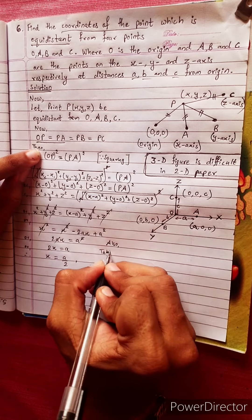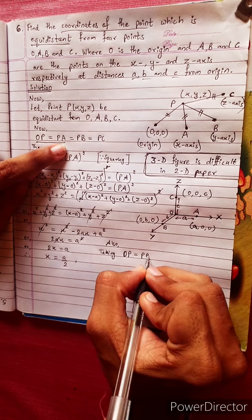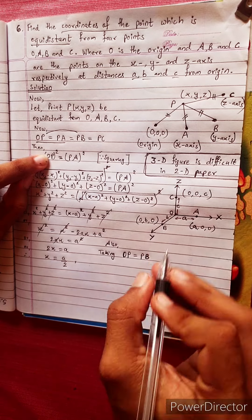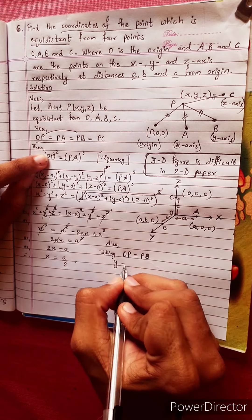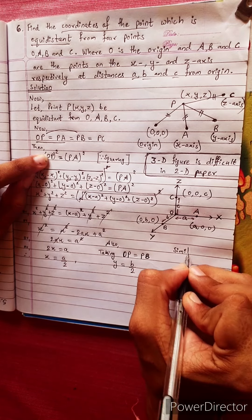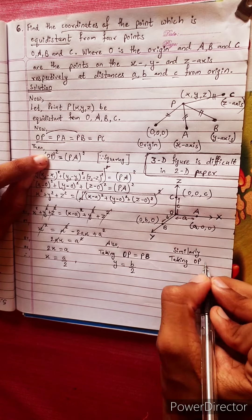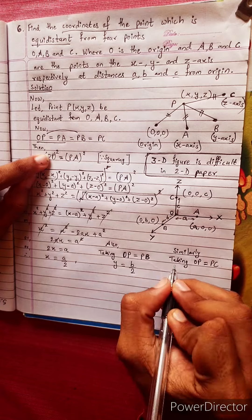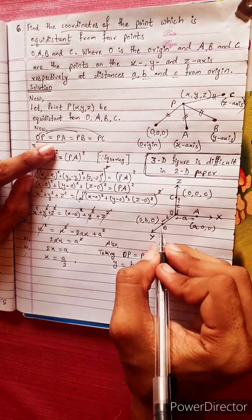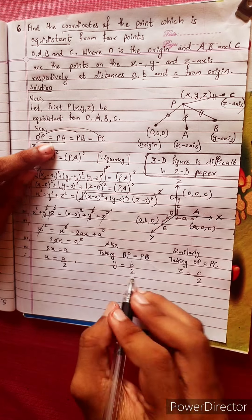Also, taking OP equals PB: since B is on the y-axis at (0, b, 0), similarly we get Y equals b by 2. Similarly, taking OP equals PC: since C is on the z-axis at (0, 0, c), we get Z equals c by 2.